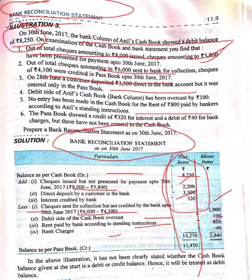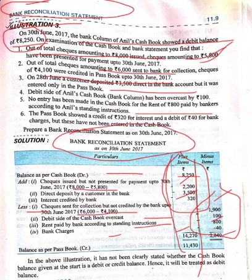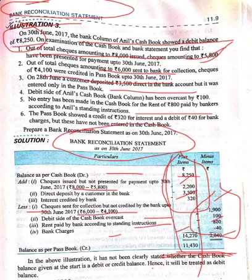Add the plus amounts and write the total here: 14,270. Add the minus amounts and write the total here: 2,840 rupees. When we subtract 2,840 from 14,270, it gives us 11,430. This 11,430 will be our answer — the balance as per passbook.